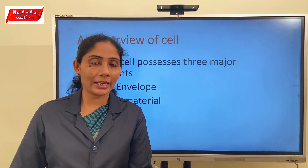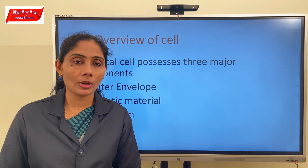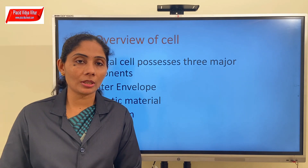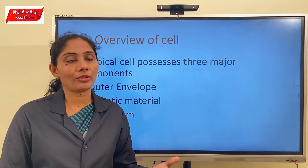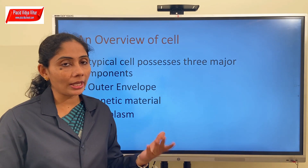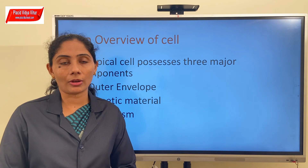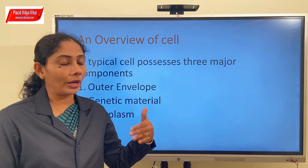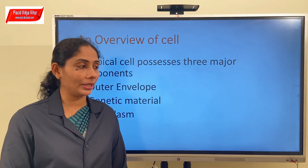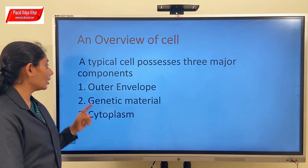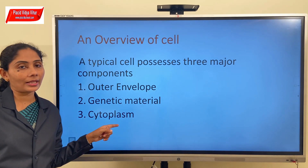Today what we are going to learn is an overview of the cell. Overview means a brief description or summary of something. So here we are going to briefly understand the structure of a cell. In all living organisms, beginning from Monera to every kingdom, all living organisms have in their cells the following three important components: the outer envelope, the genetic material, and finally the cytoplasm.